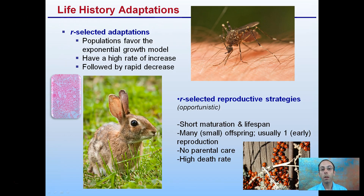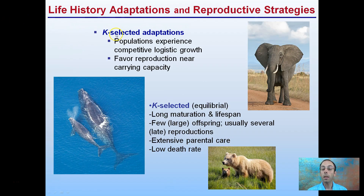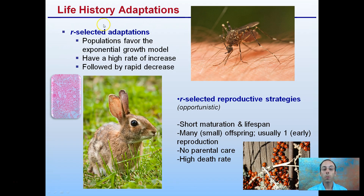Life history adaptations — there are two main key ones to focus on: R-selected and K-selected. R-selected adaptations are populations that favor an exponential growth model. They have a very high rate of increase, followed by a rapid rate of decrease. It's kind of like a boom-bust model, where they have a rapid rate of increase and then a rapid rate of decrease.